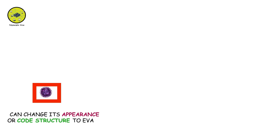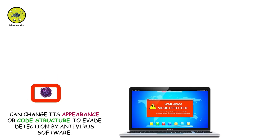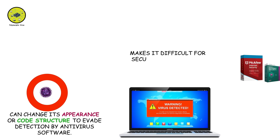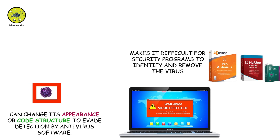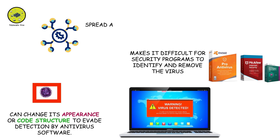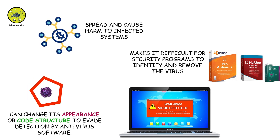Polymorphic virus. A polymorphic virus is a type of malware that can change its appearance or code structure to evade detection by antivirus software. This makes it difficult for security programs to identify and remove the virus, allowing it to spread and cause harm to infected systems.